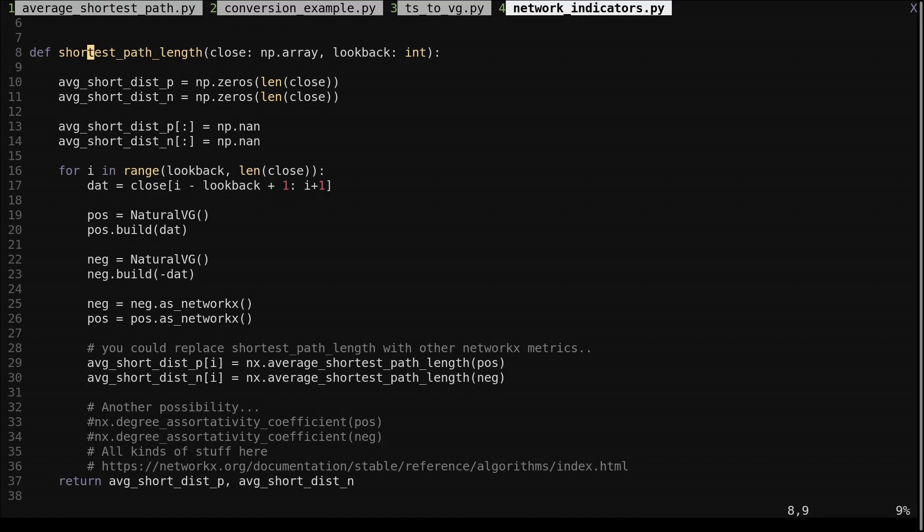Let's look at the code to compute this in a rolling window. Here's the function to do it. We pass an array of closing prices and a lookback. We create two output arrays. We will compute the average shortest path length on the regular visibility graph and the visibility graph computed with negative prices.